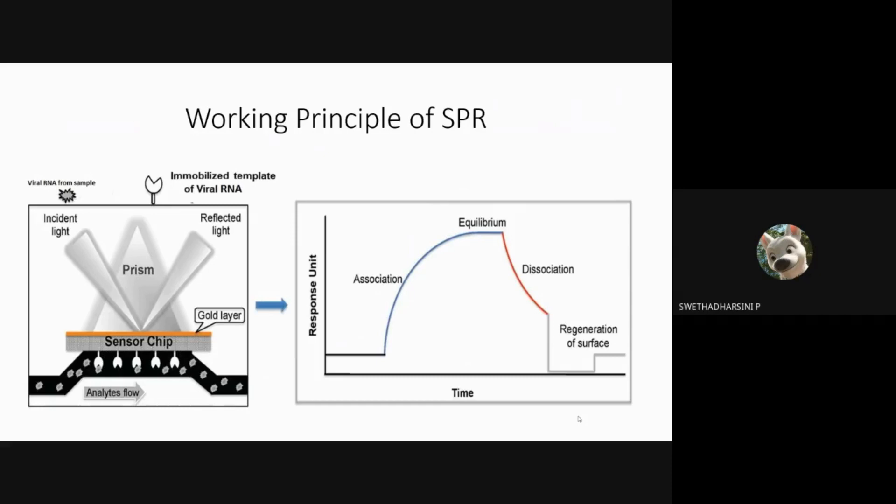SPR works on a microfluidic principle where only a small amount of sample is required. The extracted viral RNA from the collected sample binds to the immobilized template RNA. This causes an increase in the density at the sensor chip, which causes a change in the resonance angle of the reflected light when the viral RNA flows through the channel.